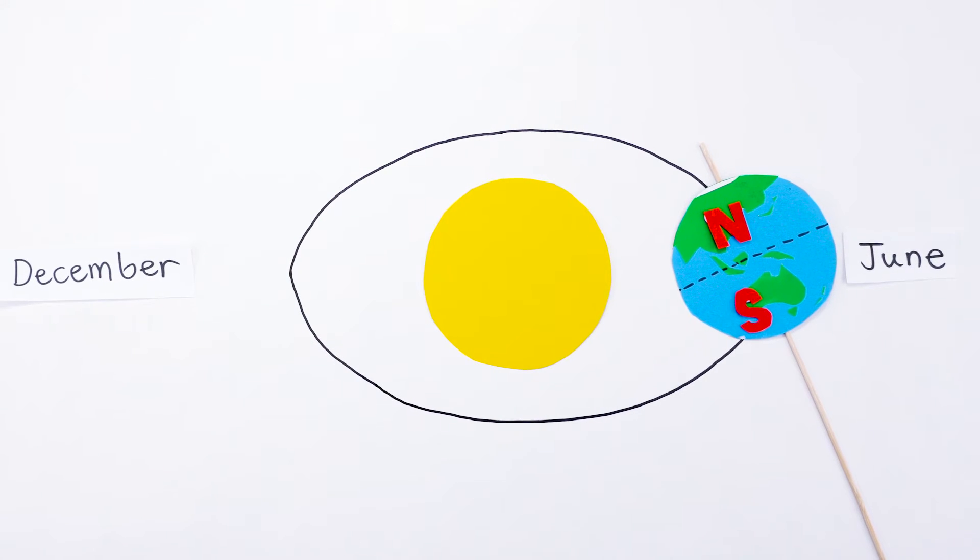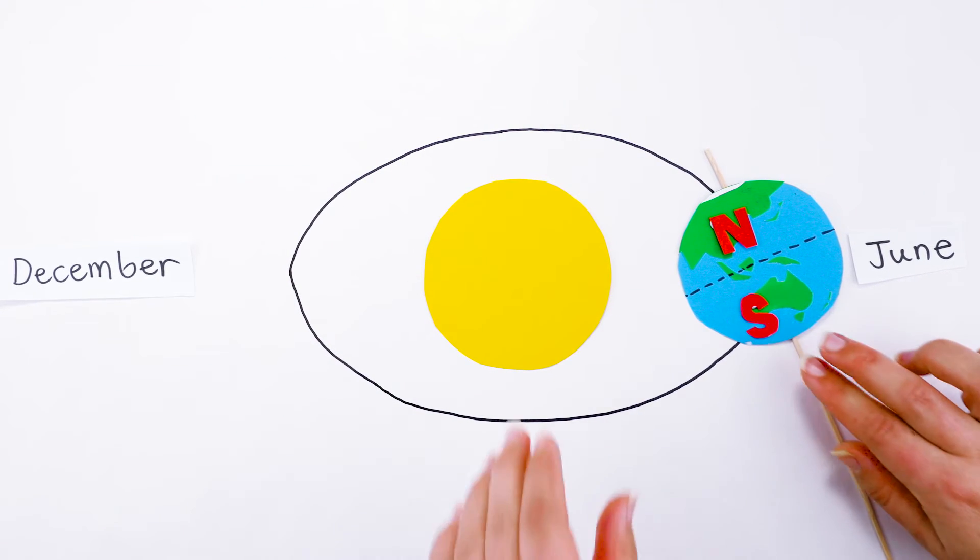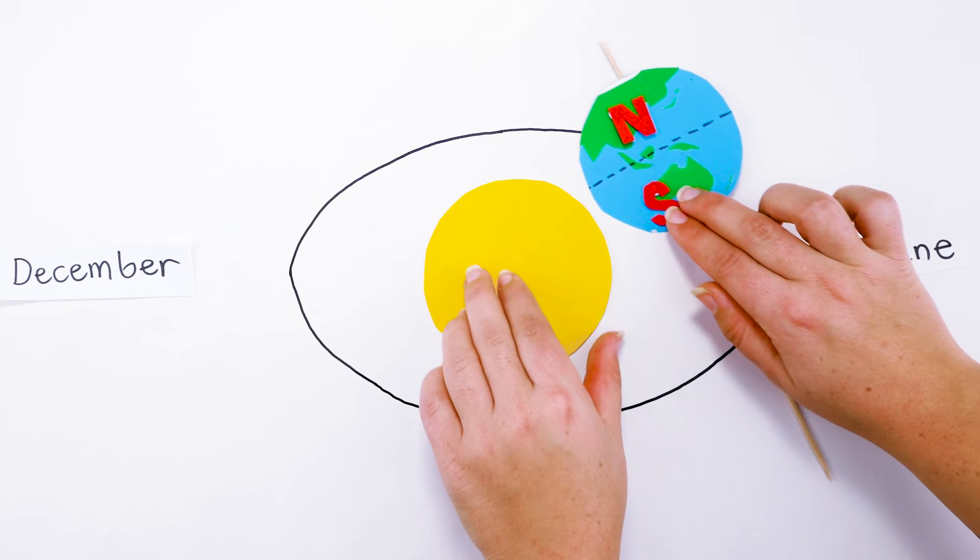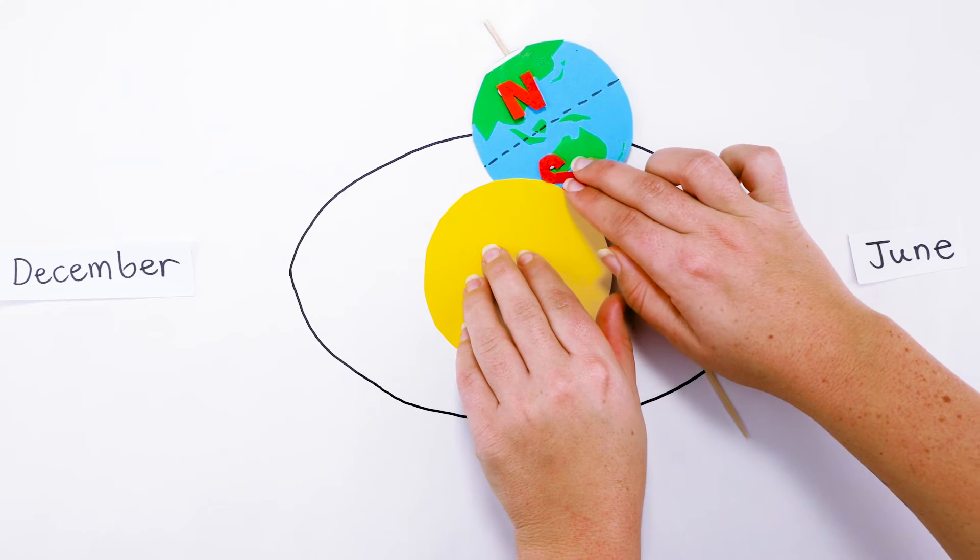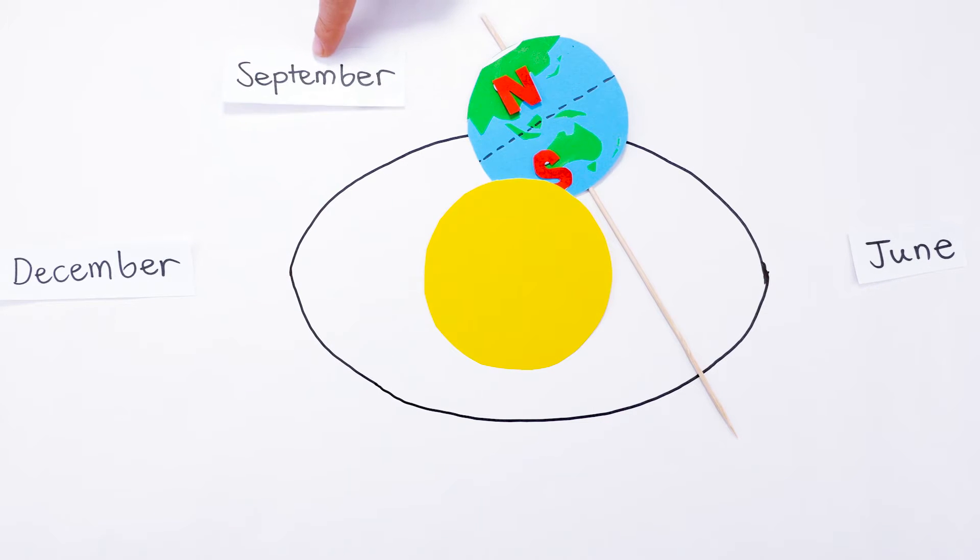What about spring and autumn? Well remember that the direction of Earth's tilt stays the same as it travels around the Sun. So in September the Earth's axis is not tilted toward or away from the Sun. It's tilted to one side.